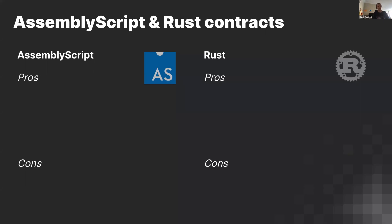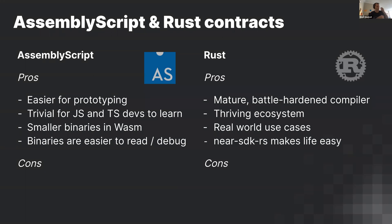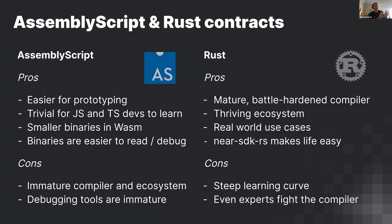Let's talk briefly about AssemblyScript vs. Rust. AssemblyScript pros: easier for prototyping, trivial to learn if you know JavaScript or TypeScript, smaller binaries, and easier to read as WebAssembly text format. Rust pros: a mature compiler, the best toolchain in the industry for compiling to WebAssembly, a thriving ecosystem with lots of real-world use cases, and near-sdk-rs makes life easier just like near-sdk-as does.